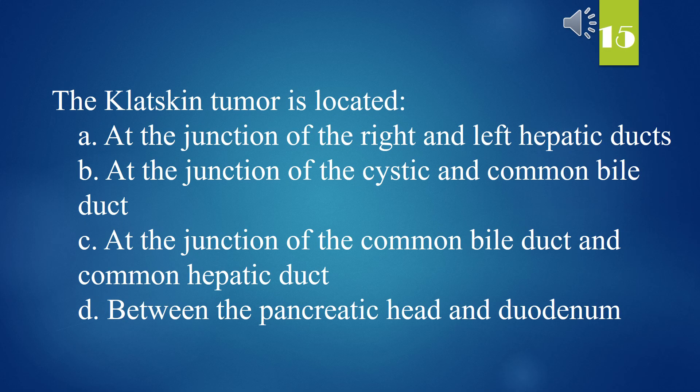The Klatskin tumor is located: A. At the junction of the right and left hepatic ducts. B. At the junction of the cystic and common bile duct. C. At the junction of the common bile duct and common hepatic duct. D. Between the pancreatic head and duodenum. The answer is A. At the junction of the right and left hepatic ducts.